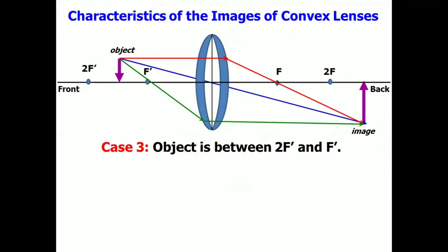And this is our case number three. Object is between 2F and F. Let's describe this image based on the following: Size, attitude, location, and type.